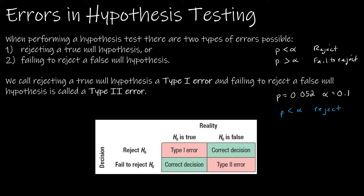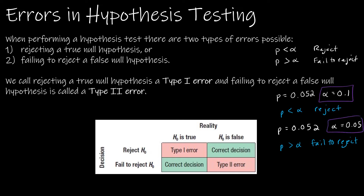However, what if I had the same p-value and instead alpha was 0.05? Well, in that case, p is actually greater than alpha and I should fail to reject. So I want you to note that I didn't change anything about the test except for alpha, the level of significance. So in one example I'm rejecting and in the other I am failing to reject. So alpha has everything to do with my decision.